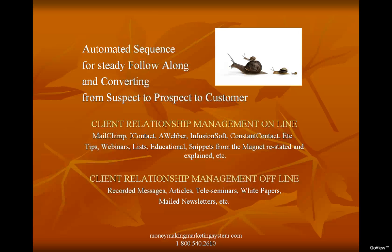Autoresponders are what they're called, and what you do is automatically send additional valuable information to the folks who have opted in to get your magnet — that free report, webinar, etc. Things that can be in your autoresponder are tips, further webinars, lists like 'The Top 20 Marketing Strategies,' educational items. One that I really like to do is take snippets from the magnet you gave them for free, restate some of the bullet points, and go into more detail.